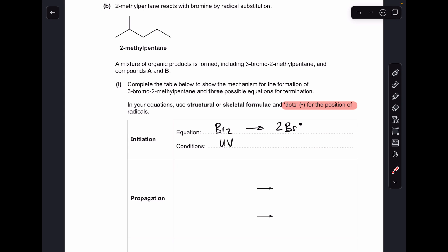Moving on to the propagation steps, you'll notice I've highlighted this part of the question here. We've got to be really specific about where the dot is, the unpaired electron. So in the first propagation step, the 2-methylpentane is attacked by one of these highly reactive bromine radicals and it's going to take a hydrogen from this carbon here, so carbon number 3, because we are making 3-bromo-2-methylpentane. So it's really important in your organic radical product that your dot goes on carbon 3.